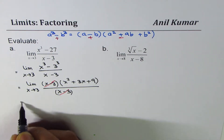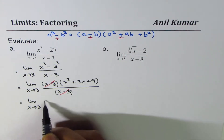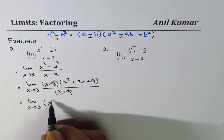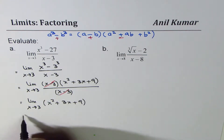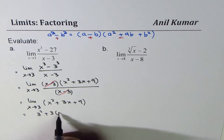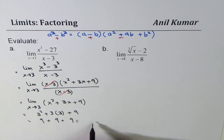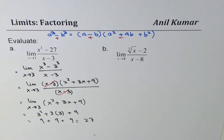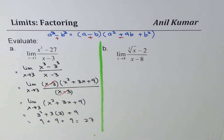So you get limit as x approaches 3, and the function is x squared plus 3x plus 9. Now you can substitute 3: 3 squared plus 3 times 3 plus 9, which is 9 plus 9 plus 9, which equals 27. That is how you can factor and find the limit for such questions very easily.